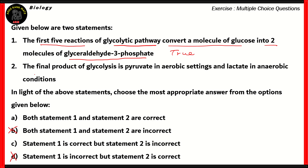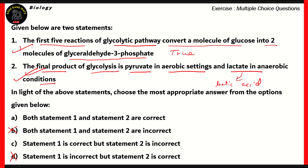Now let's look at statement 2: The final product of glycolysis is pyruvate in aerobic settings and lactate in anaerobic settings. In anaerobic conditions, such as those that muscles endure during intense exercise, lactic acid or lactate is formed in the muscles, causing pain. So statement 2 is also a correct statement. Since both statements are correct, the right option is option A. Option C is incorrect because it says statement 2 is incorrect, whereas in fact it's not. So statements 1 and 2 are both correct, making option A the right answer.